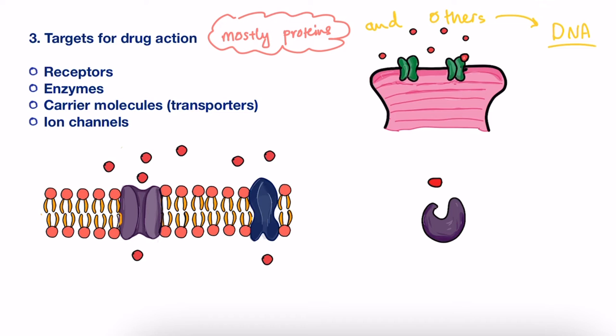Here are the four main kinds of protein involved as primary drug targets, which are receptors, enzymes, carrier molecules (also known as transporters), and ion channels. In this video we will briefly outline them, but each one will be discussed in further videos.